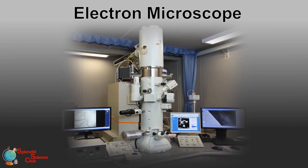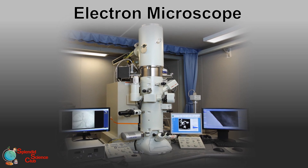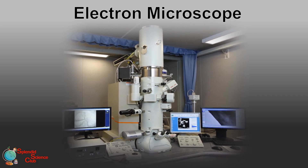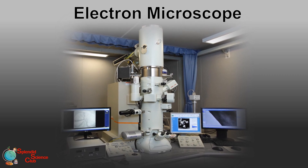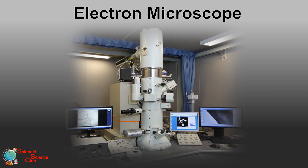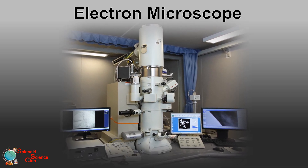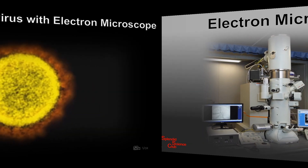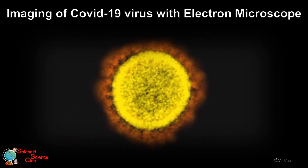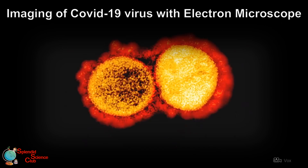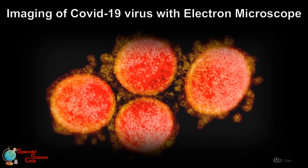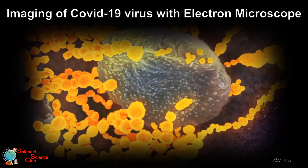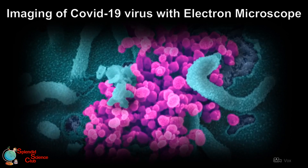The electron microscope is sophisticated and advanced equipment. Its maximum magnification is about ten million times and its resolution limit is about 0.2 nanometers. Living specimens cannot be observed under the electron microscope because samples are placed in a vacuum. Viruses can only be seen through the electron microscope. These days you hear a lot about viruses — here are some images of the coronavirus from an electron microscope. Most coronaviruses have a crown-like appearance. These images are made using scanning and transmission electron microscopes and are digitally colorized.